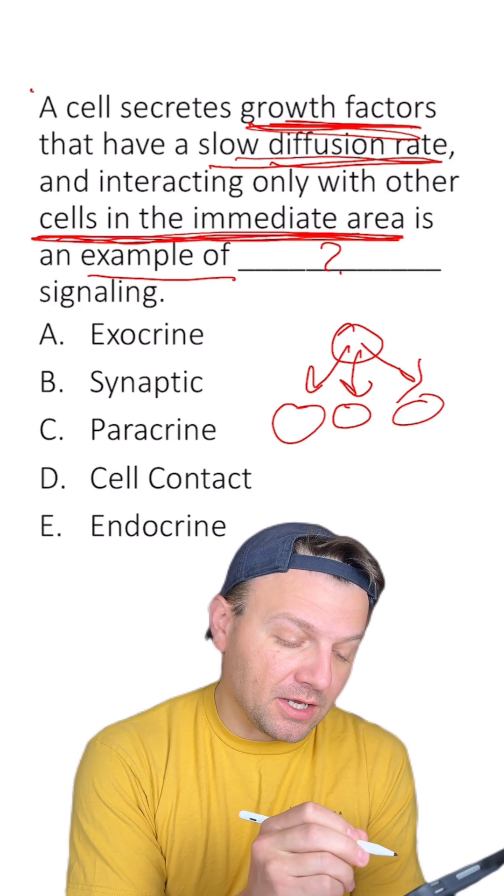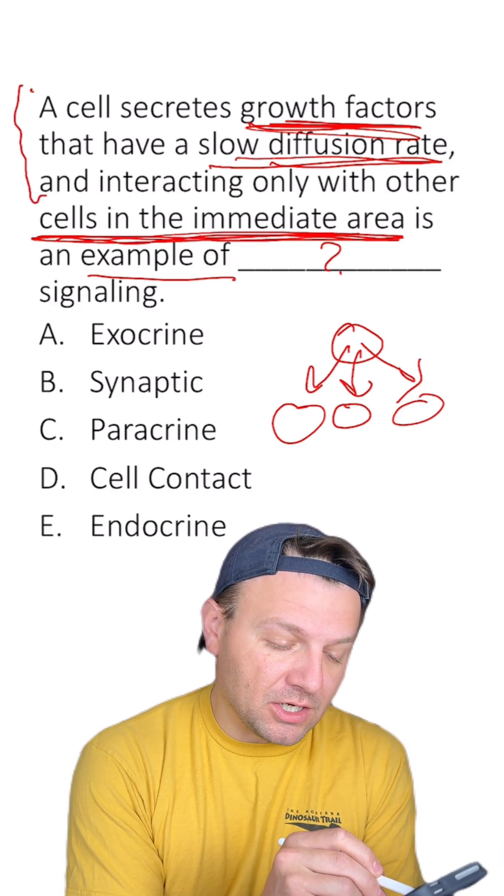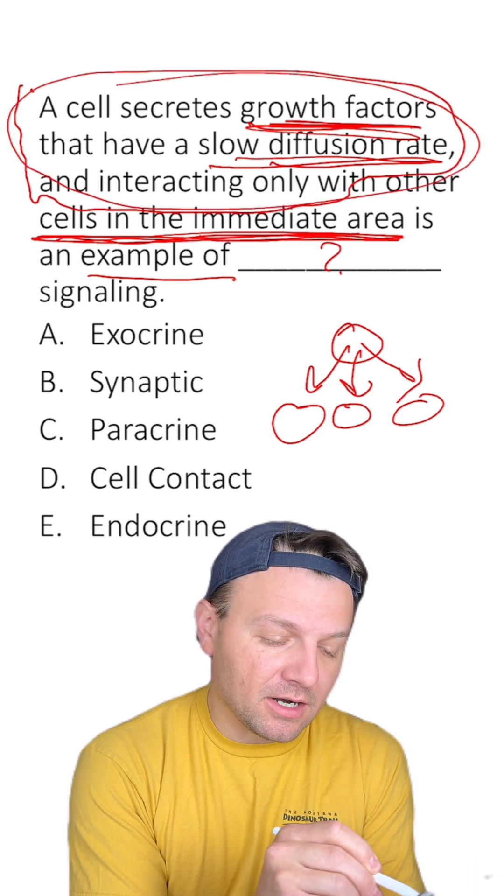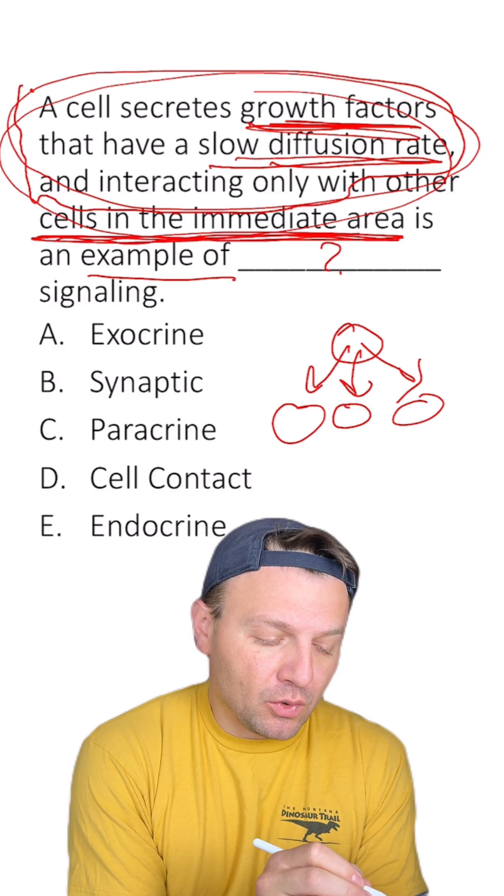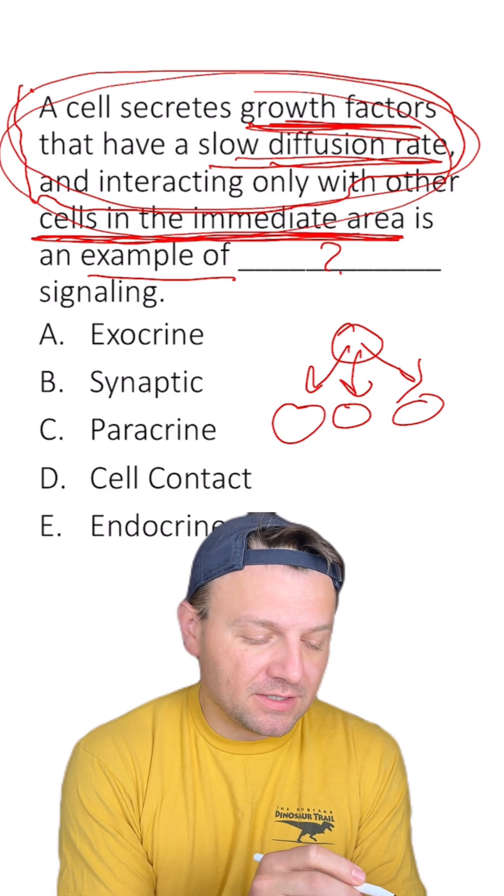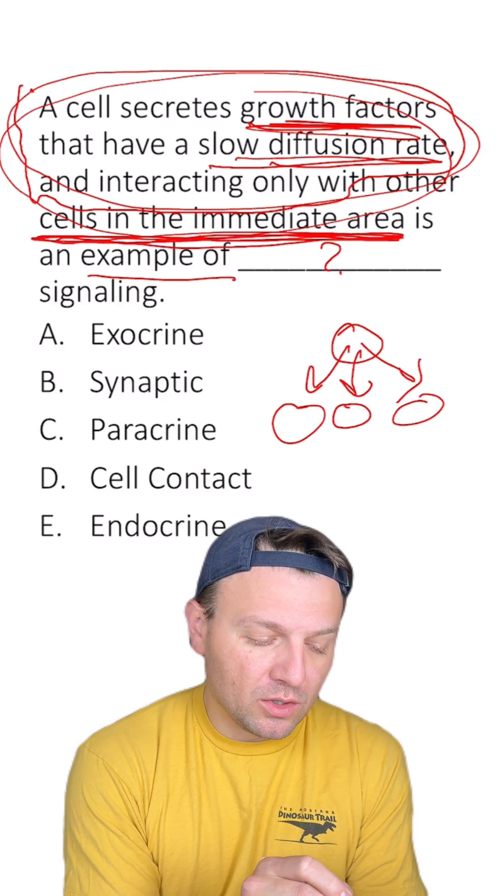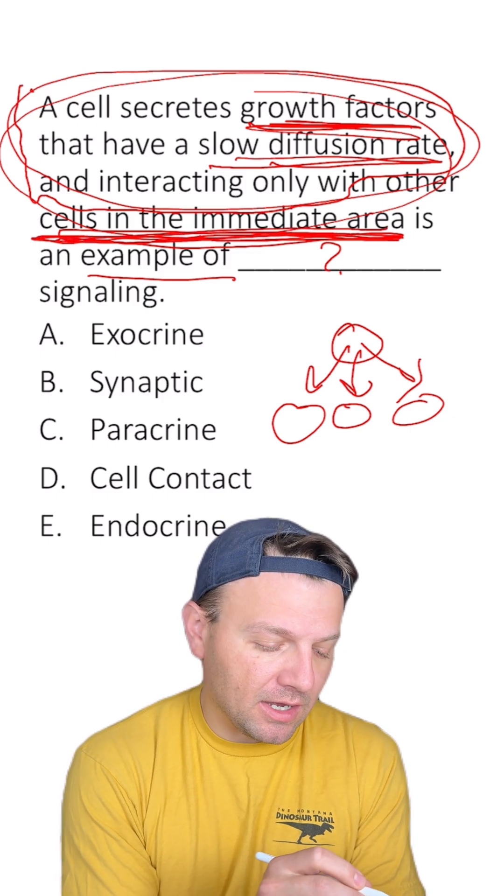That first part here, where all of this information is, this part right here, this part is confusing and trips students up. But the question is really asking what type of cell communication occurs when cells communicate to other cells that are close by?